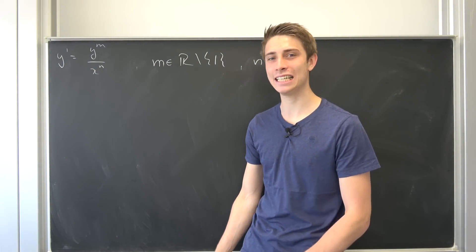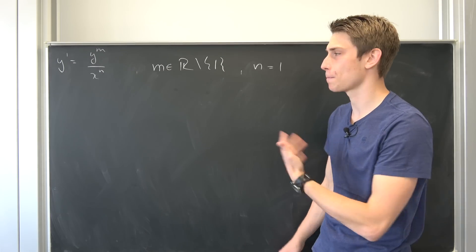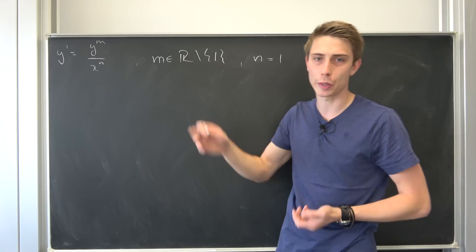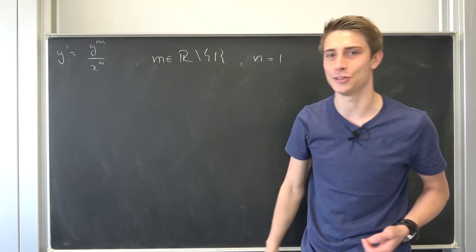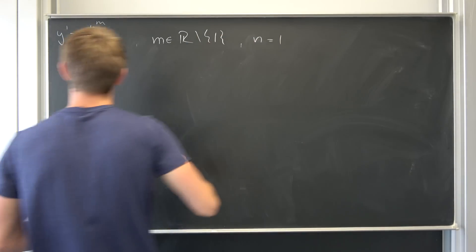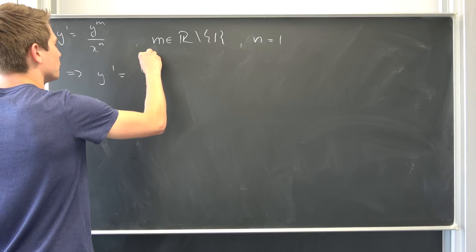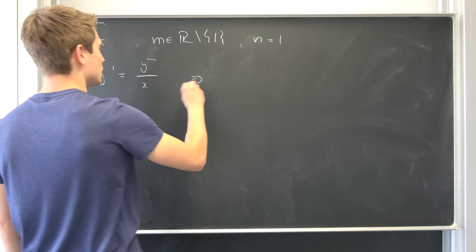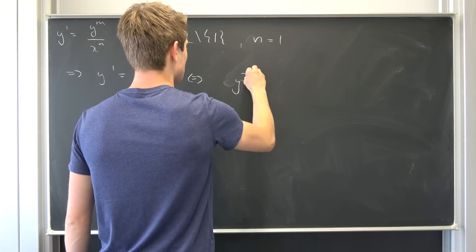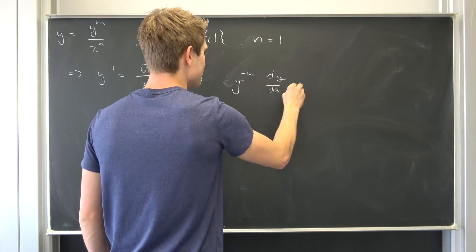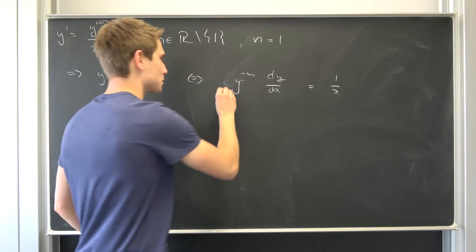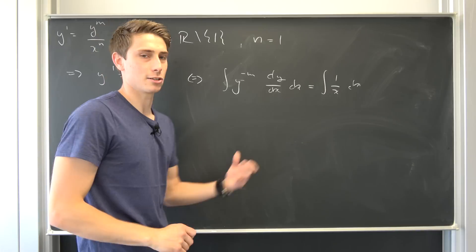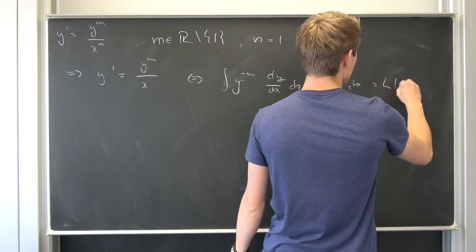This last case is so hard — just kidding, you know how to solve this. So n equals 1 and m is an element of the real numbers without 1 — the roles of n and m have just switched. Plugging in: y prime equals y to the nth power over x. Multiplying both sides by the reciprocal of y to the nth power gives y to the negative nth power times dy/dx equal to 1 over x. Integrating both sides, the right side evaluates to natural log of x plus some constant c.